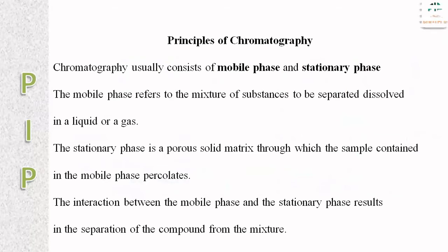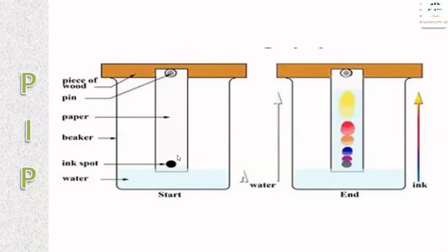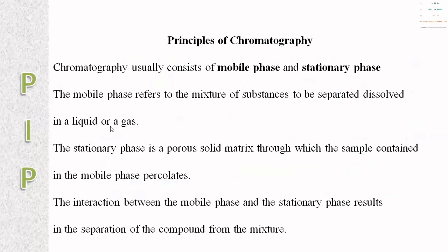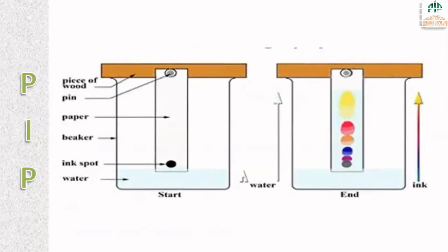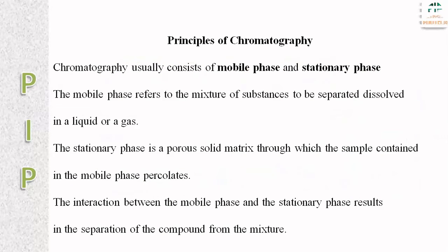Principles of chromatography: as studied earlier, there are two phases — mobile phase and stationary phase. The mobile phase refers to the mixture of substances to be separated, in liquid or gas form. The stationary phase is a porous solid matrix through which the sample contained in the mobile phase percolates. A sheet of paper or cloth is considered the stationary phase. The interaction between the mobile phase and stationary phase results in the separation of compounds from the mixture.